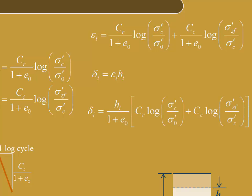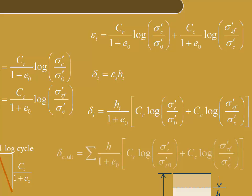If we factor out 1 over 1 plus e0, we have the equation for the consolidation settlement of the sub-layer. Getting the consolidation settlement for the entire compressible layer is simply a matter of summing up the contributions of each sub-layer. This is our equation for computing the consolidation settlement.